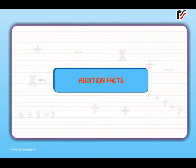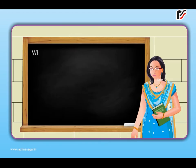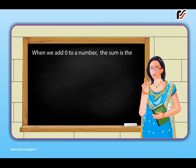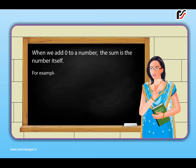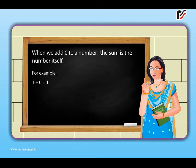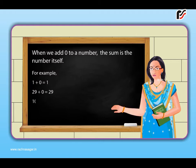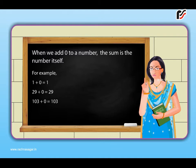Addition facts. When we add 0 to a number, the sum is the number itself. For example, 1 plus 0 is equal to 1. 29 plus 0 is equal to 29. 103 plus 0 is equal to 103.